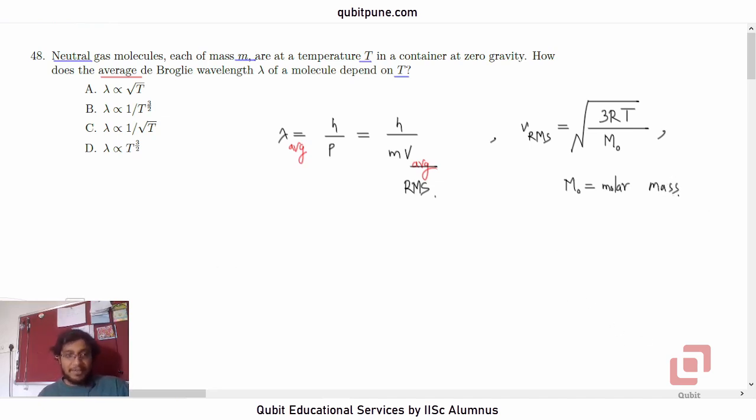Because in this case R and M0 will be constants, we have to say that V RMS is directly proportional to root T. Lambda average, which is inversely proportional to V RMS, will be inversely proportional to root of T.